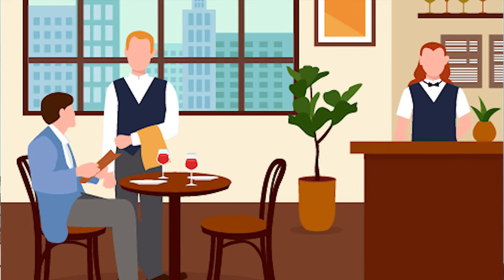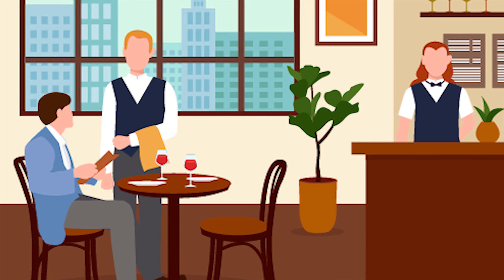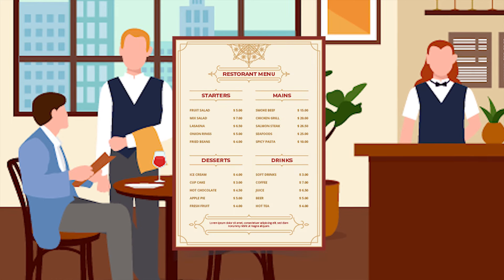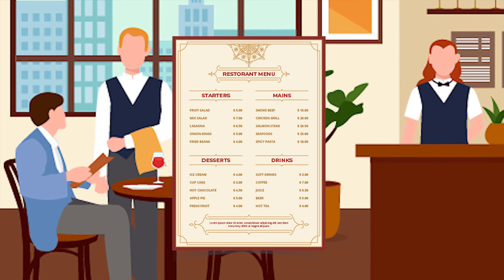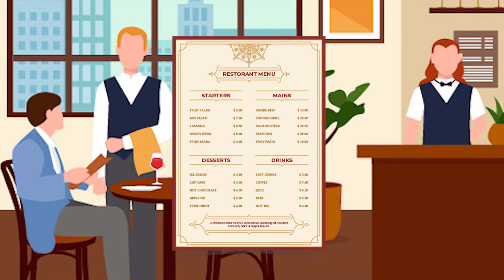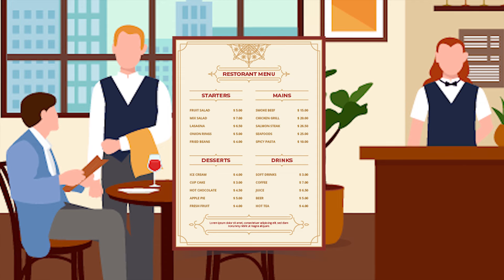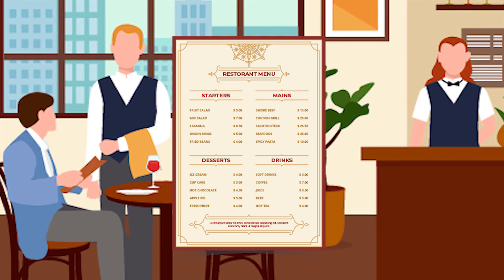We need to show that information to our client or customer in a way they can understand. For example, a real-time analogy: when you go to a hotel, the waiter gives you a menu card with categories — starters, main course, soft drinks, non-veg, vegetarian, Chinese — all organized separately. But what if everything was listed from serial number one to one hundred? That would be very difficult. You go to the starter section and choose only what you want.